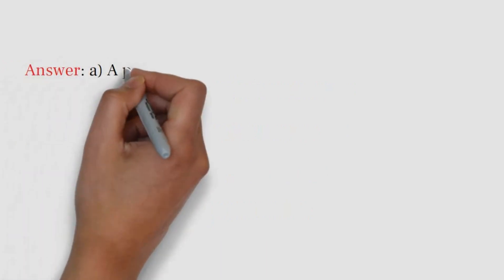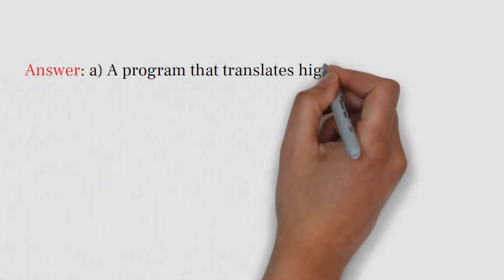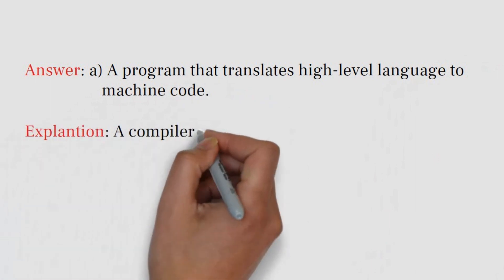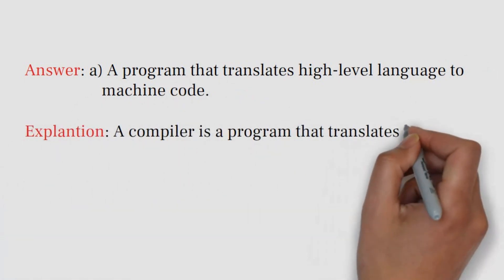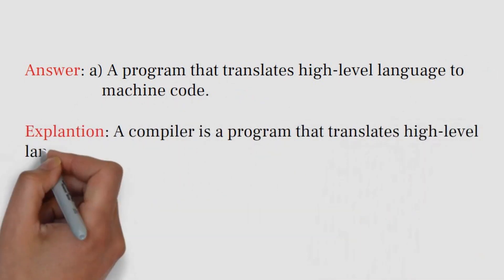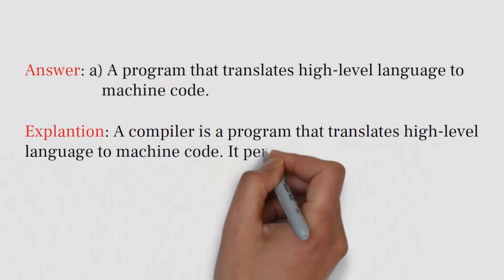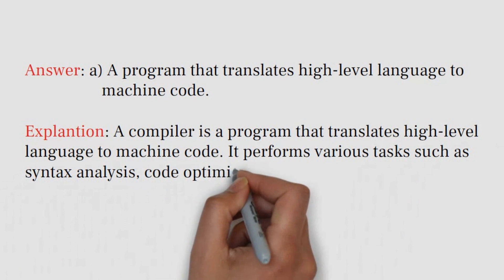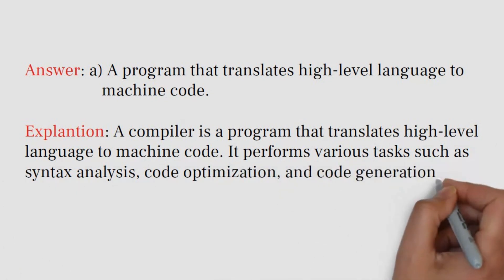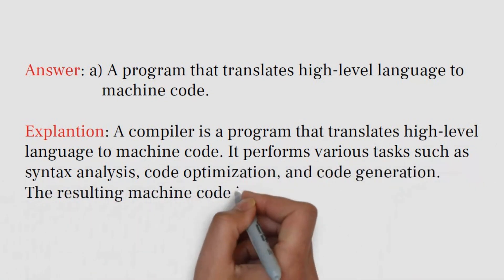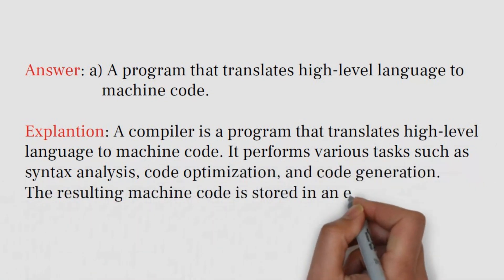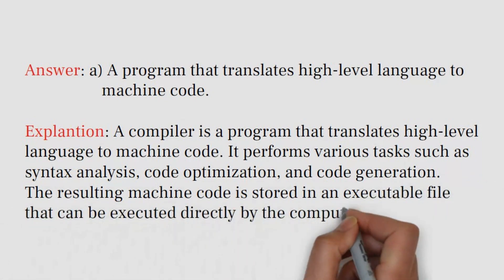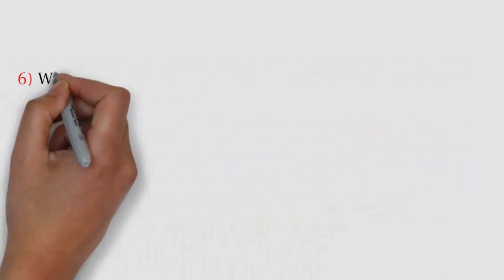Answer: A. A program that translates high-level language to machine code. Explanation: It performs various tasks such as syntax analysis, code optimization, and code generation. The resulting machine code is stored in an executable file that can be executed directly by the computer.